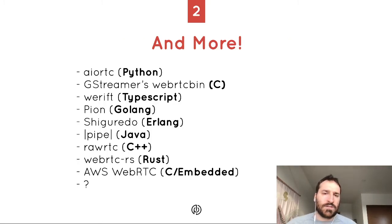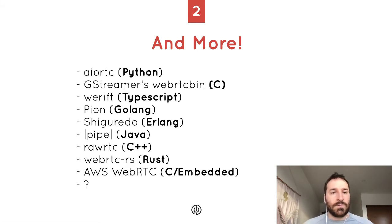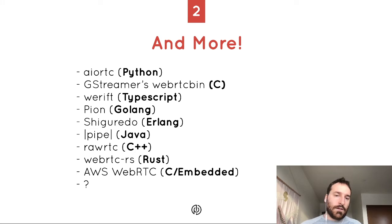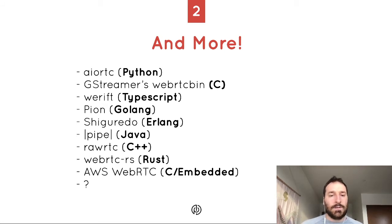The great thing about WebRTC is it's available in a lot of places. We have a Python implementation, we have TypeScript, we have Go, a Rust one is coming up, and then we have Google's implementation in C++. What's exciting is I think WebRTC is slowly becoming maybe the best protocol for inter-process communication between different languages. It doesn't require a PubSub server, it doesn't require them to be running in the same network — and we'll talk more about what that means later.